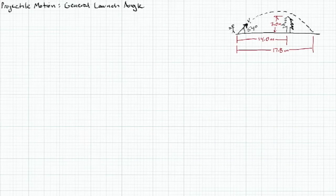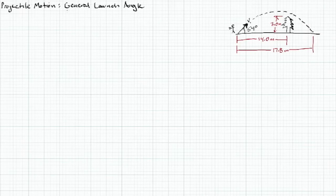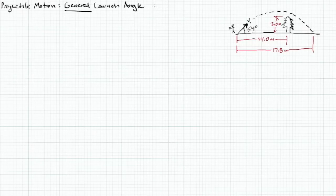Welcome back. We've been talking in class about projectile motion with zero launch angle — an object moving out horizontally and being pulled down vertically due to gravity, causing a parabolic path. We're still going to be talking about parabolic paths, but now we're dealing with general launch angles, meaning any angle between zero and ninety degrees.